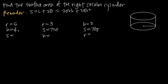In this first example, we're told that the radius of the base is 5 units and the height of the cylinder is 4 units, and we've been asked to find surface area. So we label the cylinder: radius is 5, height is 4. We're going to use the formula 2πrh + 2πr², since we've been given r and h.